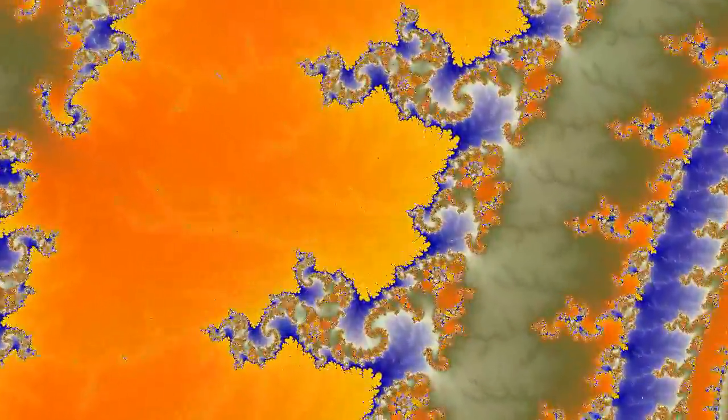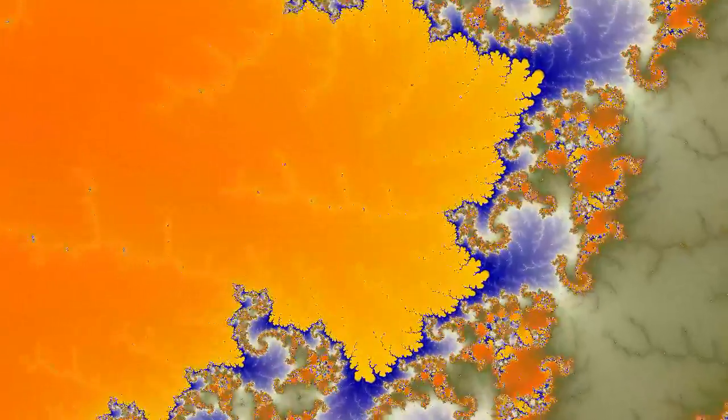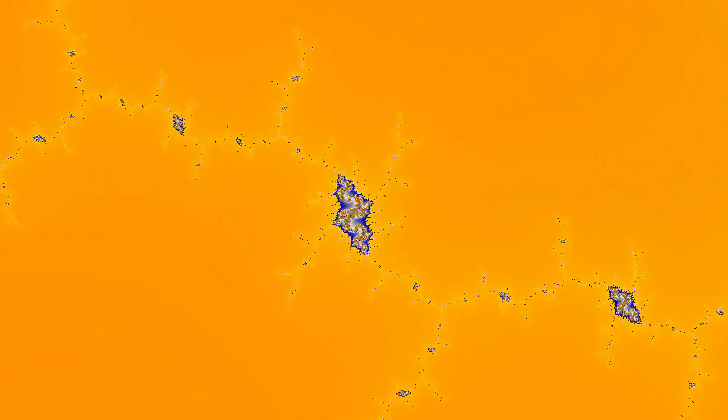Just take a point called Z in the complex plane. Let Z1 be Z squared plus C, and Z2 is Z1 squared plus C, and Z3 is Z2 squared plus C, and so on. If the series of Z's should always stay close to Z instead of trend away, that point is in the Mandelbrot set.